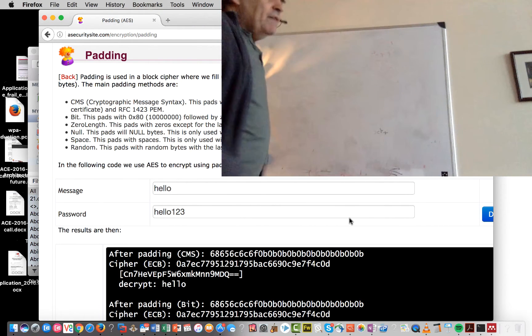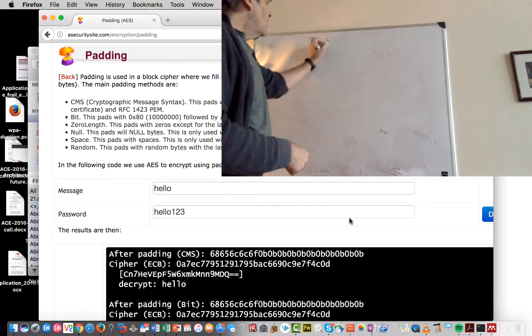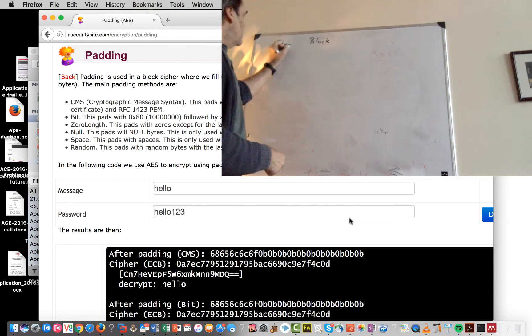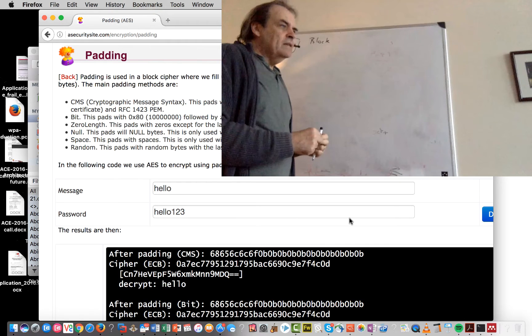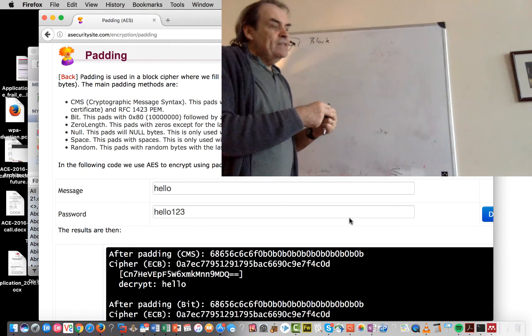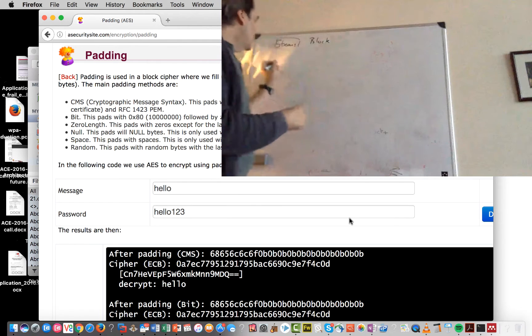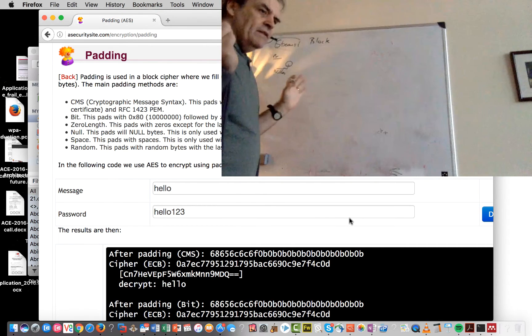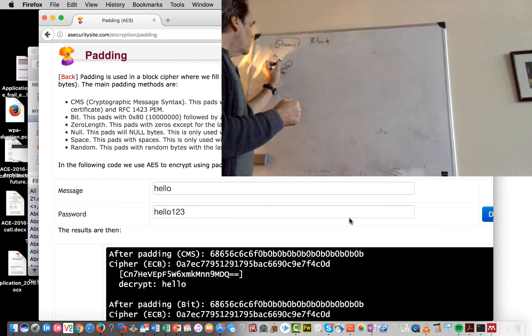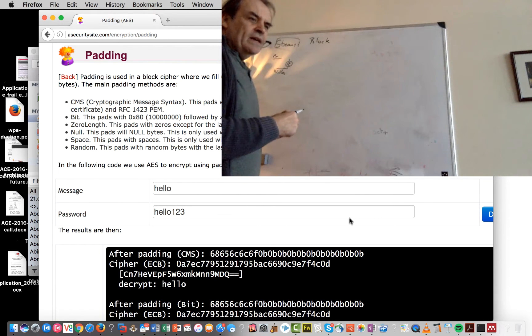Normally what we have is we have a block cipher. We can also have a stream cipher, and a stream cipher takes one bit at a time and then encrypts it. So typically in something like RC4 we take our plain text stream, we then have some sort of initialization vector and we have a key. And from that we create an infinitely long key that we apply to our stream, typically with an exclusive OR operation.